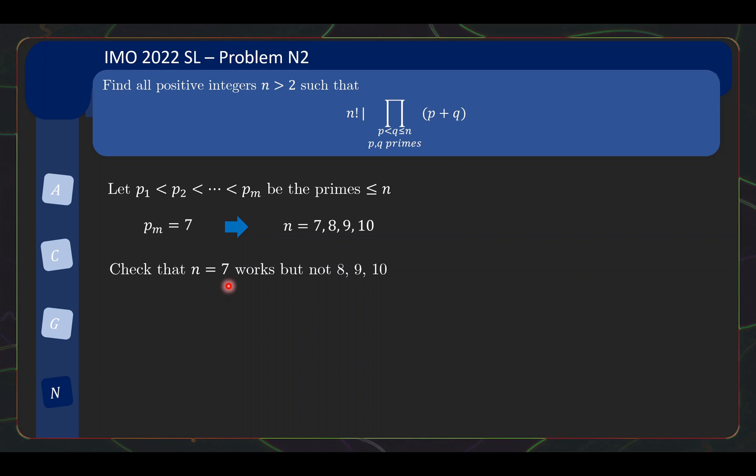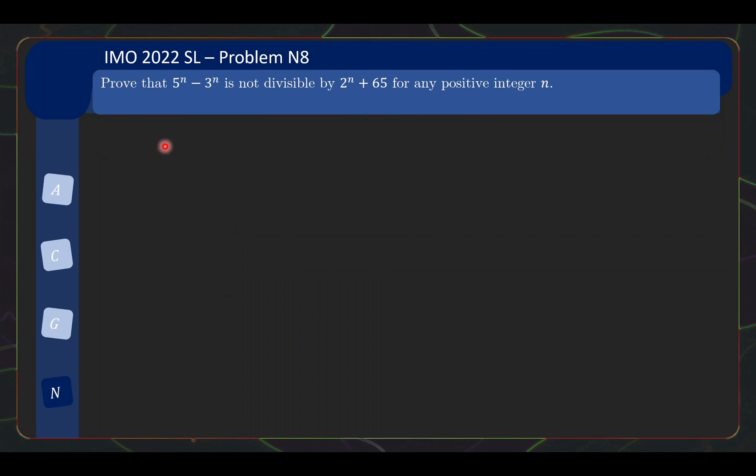I hope you found this number theory problem fun. Without further ado, let us take a look at problem N8, which is where the fun begins. For N8, we have a really short problem: we need to prove that 5^n - 3^n is not divisible by 2^n + 65 for any positive integer n.